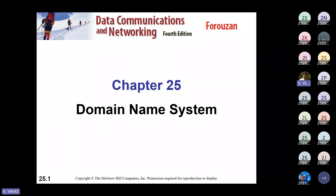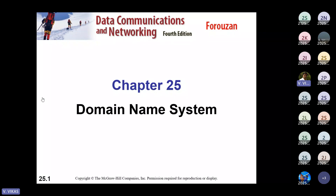The question is: how does the system understand those names? If somebody asks you to remember the IP address of google.com or YouTube, it will be really difficult. Even in our mobile phones, we don't store contacts with phone numbers — we store them with names so we can identify people easily. The same applies to IP addresses: it's not possible for us to remember them, so we give a name instead.